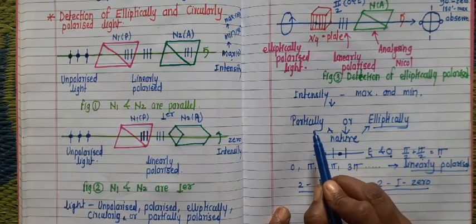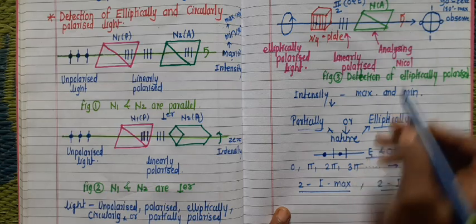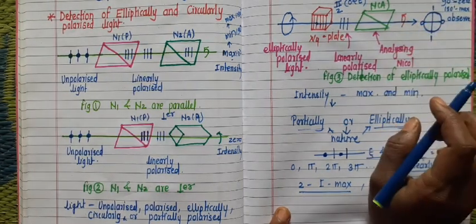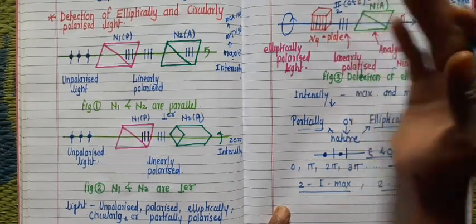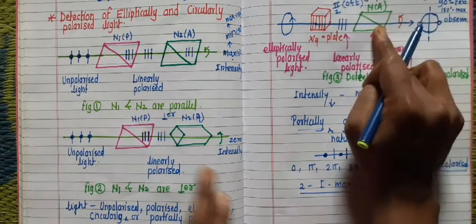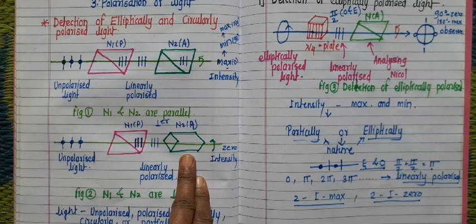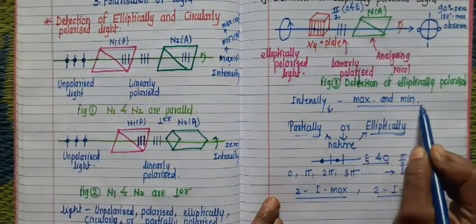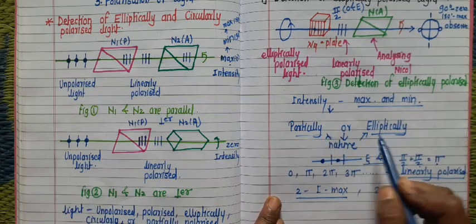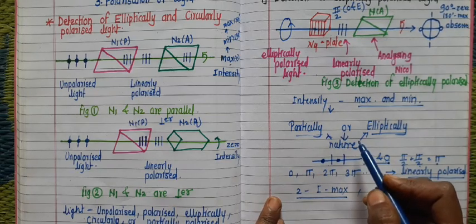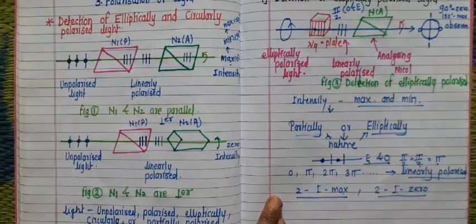Here we consider two cases: light is either partially polarized or elliptically polarized. But if our light is partially polarized, when we rotate the analyzer there is no change in intensity of light, because only plane polarized light consists of vibrations in one plane. When this analyzer is perpendicular, we observe intensity is zero only for plane polarized light. So here we can use a quarter wave plate to detect elliptically polarized light.